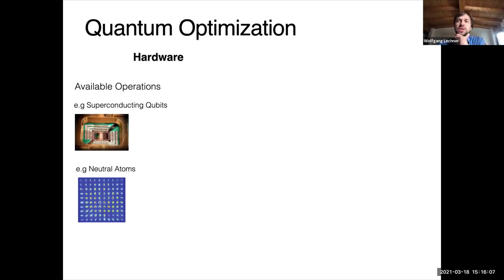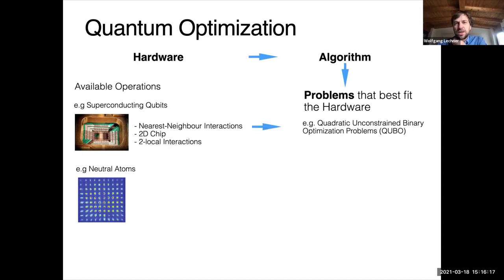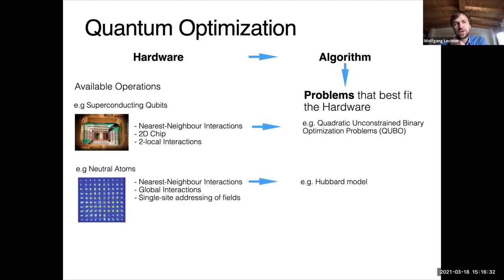What we usually do in quantum computing is start with the hardware that we have available and then think about algorithms that best fit this hardware. For example, with superconducting qubits like the D-Wave chip, we have nearest-neighbor interactions on a 2D chip and pair interactions, which means the natural fit would be quadratic unconstrained optimization problems. Or if we have neutral atoms, where people are building quantum computers, there are different interactions and different ways this works.